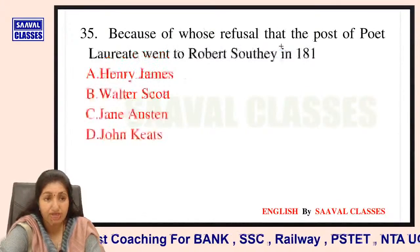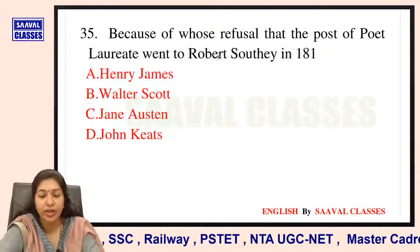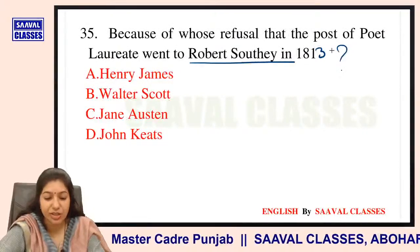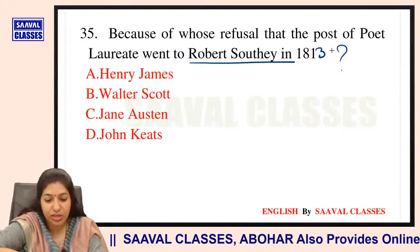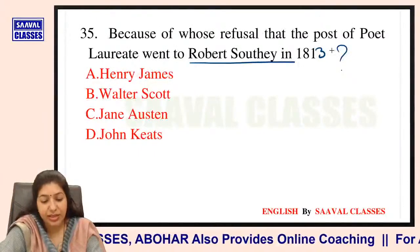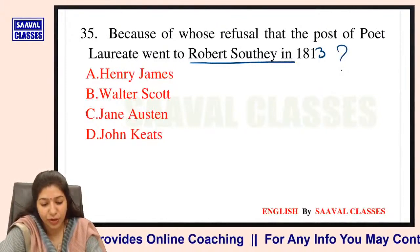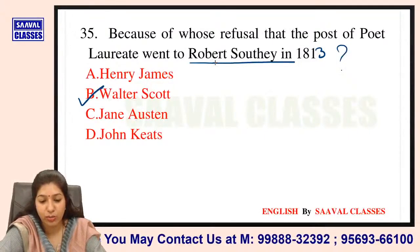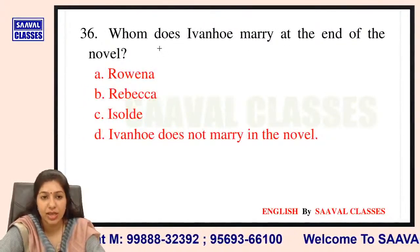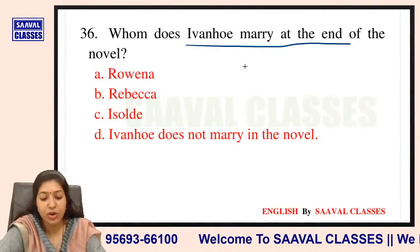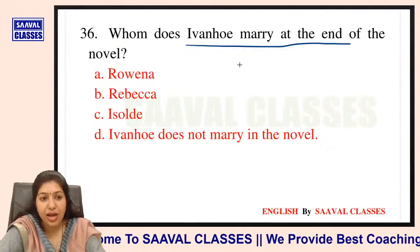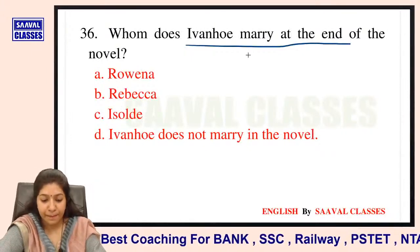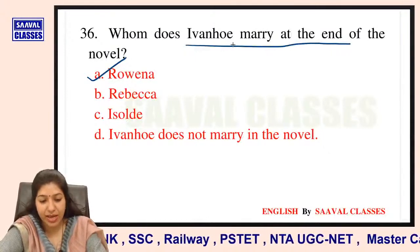Question number 35: Because of whose refusal did the post of poet laureate go to Robert Southey in 1813? Options are Henry James, Walter Scott, Jane Austen, ya John Keats? Walter Scott ko ye position di gayi thi but he refused it, aur us ki badolat Robert Southey ko ye post mili thi 1813 mein. Question number 36: Whom does Ivanhoe marry at the end of the novel — Rowena, Rebecca, or Isolde? He marries Rowena.